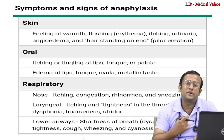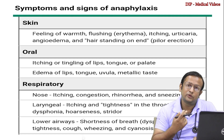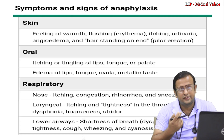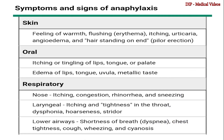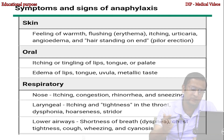Respiratory compromise occurs in 85% of cases. In the nose: itching, congestion, rhinorrhea, and sneezing. Laryngeal symptoms: itching and tightness in the throat, dysphonia, hoarseness, and stridor. Lower airways: shortness of breath, chest tightness, cough, wheezing, and cyanosis.